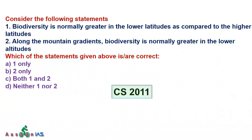There was a question in 2011 stating: biodiversity is normally greater in lower latitudes as compared to higher latitudes — lower latitudes means near the equator. Along mountain gradients, biodiversity is normally greater at lower altitudes. Both statements are correct.